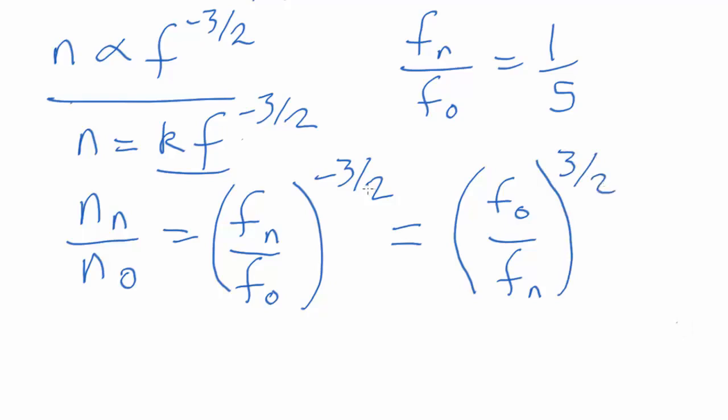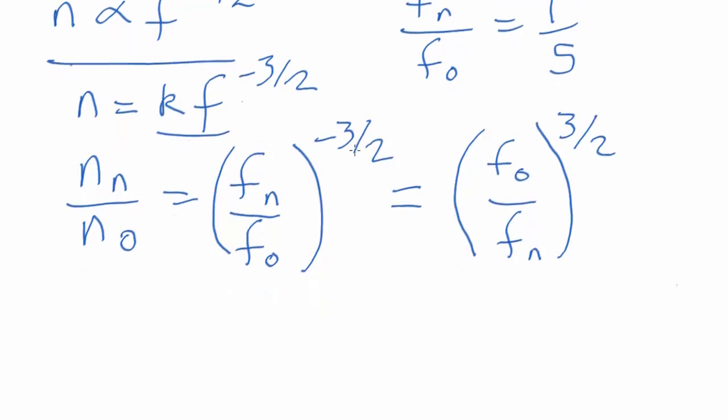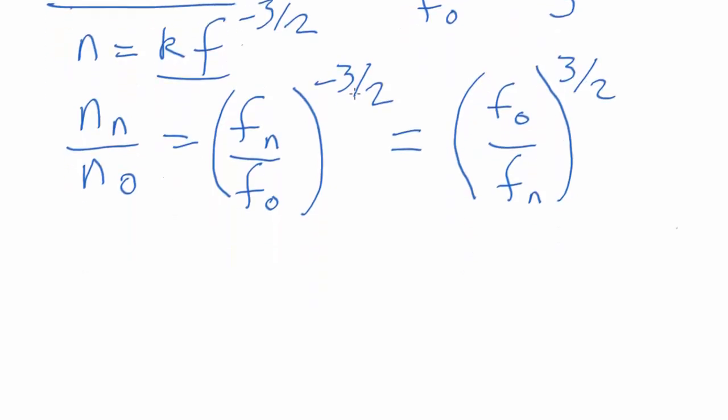Because something to the minus an index is just something to the plus index reciprocal, one over it. So what that tells us is the number we expect to find in the new survey is equal to the number in the old survey times the ratio of fluxes to the three halves power, which is five to the power of three halves. Three halves is just five times the square root of five.